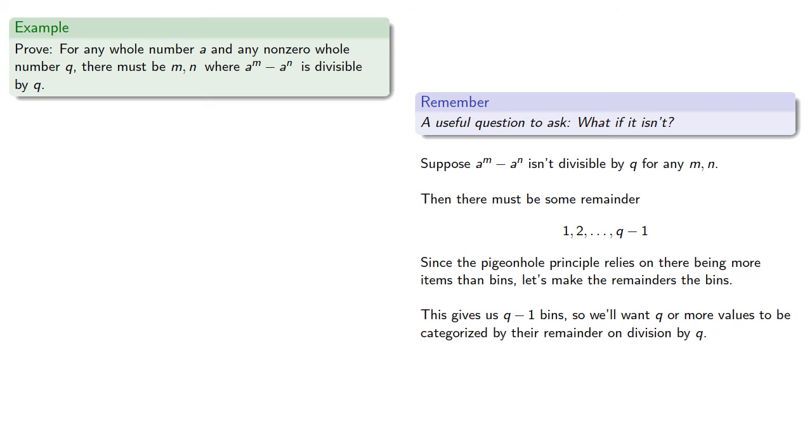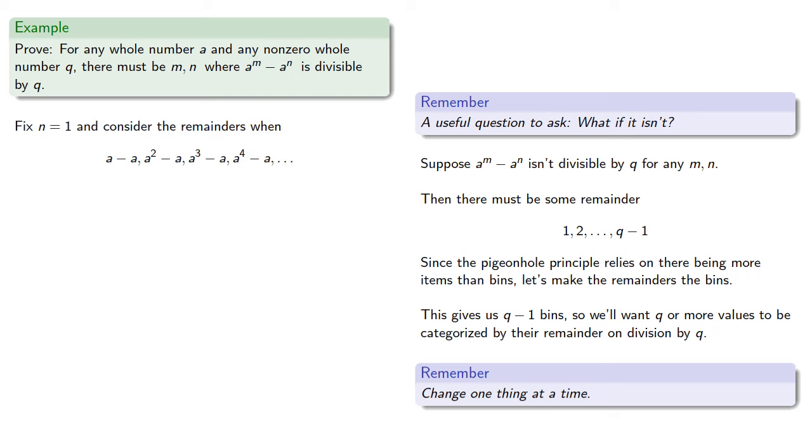Now another useful idea to keep in mind is to change one thing at a time. There's two exponents, m and n, so let's fix n, say we'll make it equal to 1, and consider the remainders when a minus a, a squared minus a, a cubed minus a, and so on, are divided by q.